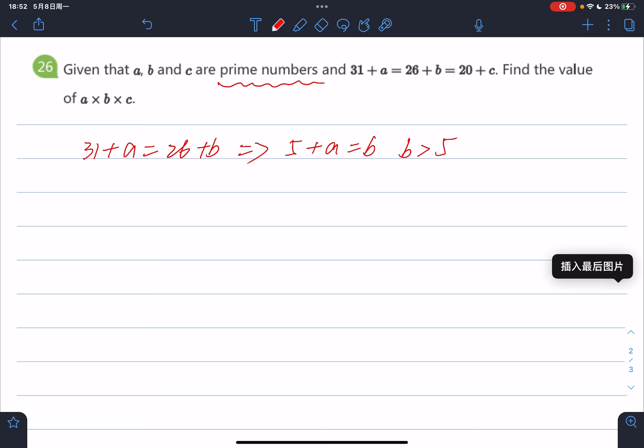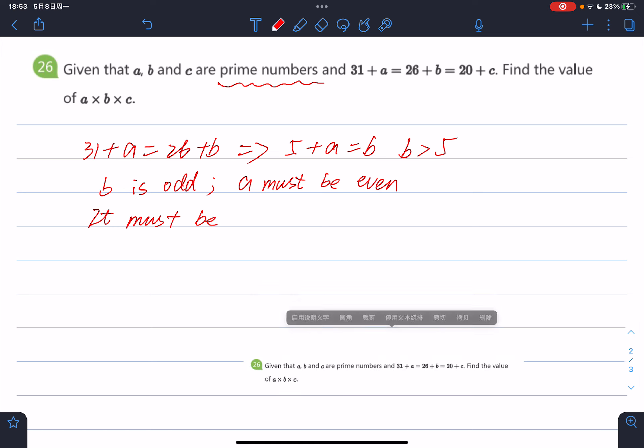Therefore, based on b is more than 5, and also b is a prime number, we can know that b is odd, and a must be even. So it must be a = 2 and b = 7.